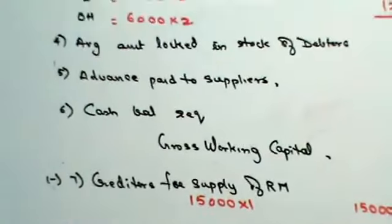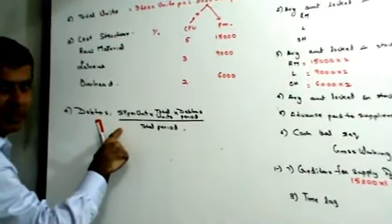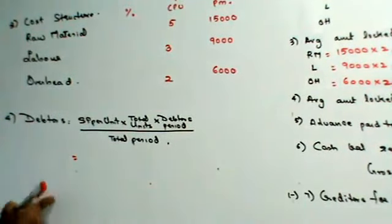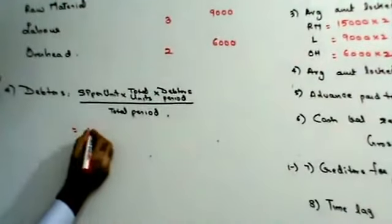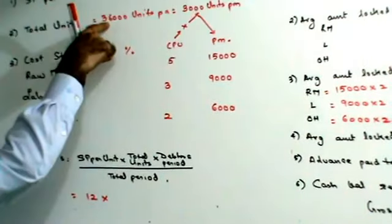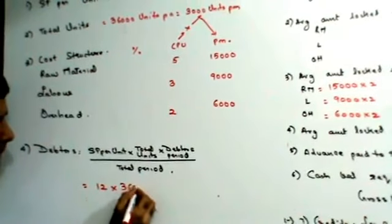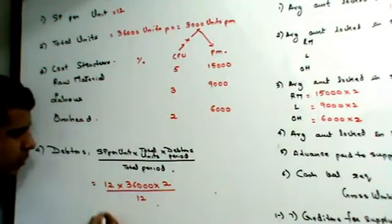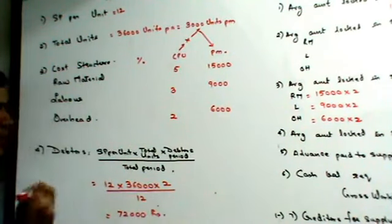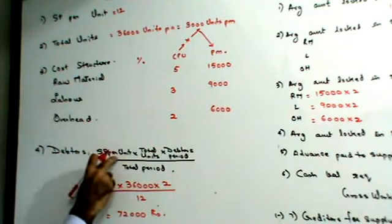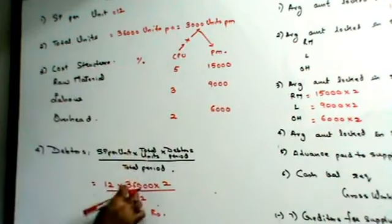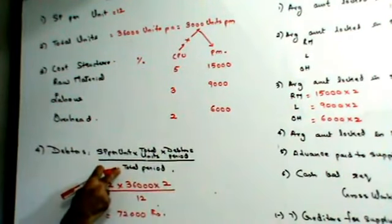Credit allowed to debtors is 2 months. Now let's move here. Debtors. As I explained in the previous sum, debtors is calculated using this formula: selling price per unit into total units. Selling price per unit is 12 rupees into total units per annum 36,000 into debtors period 2 months divided by 12 months. So this is going to be 72,000. Let me show you this once again. Selling price per unit, this is my selling price per unit, into total units 36,000. Debtors period is given in the sum divided by total period. In a year, there are 12 months.